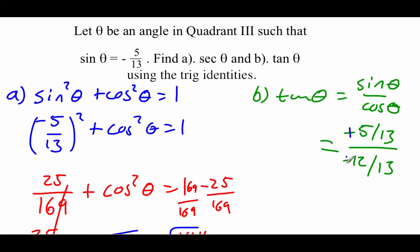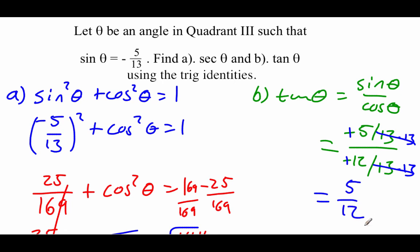Now I see a couple of negatives, so these are going to become positives. I see a couple of divided by 13s, so I'm going to multiply top and bottom by 13 to get those things to cancel out. So we get 5 over 12 as our tangent value.